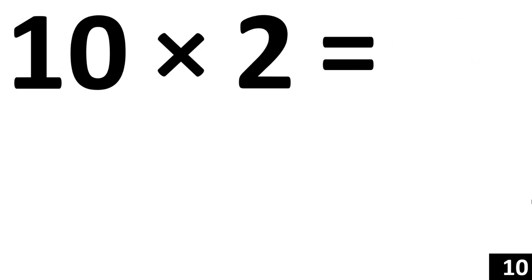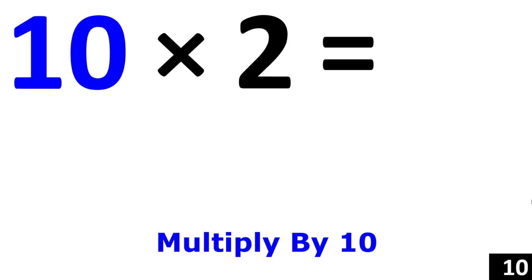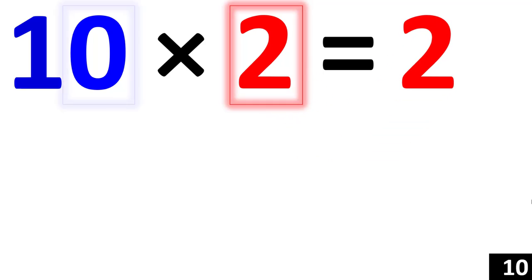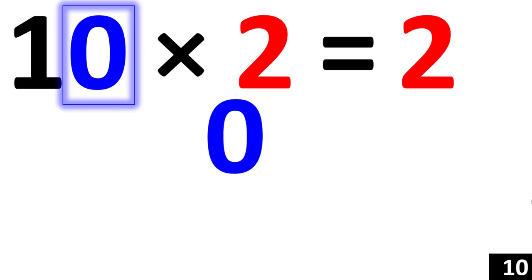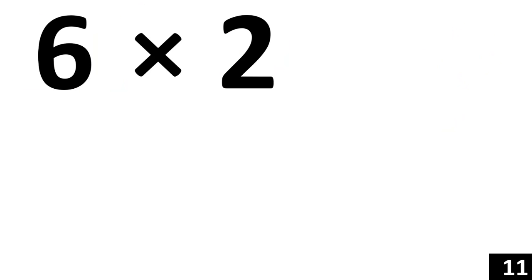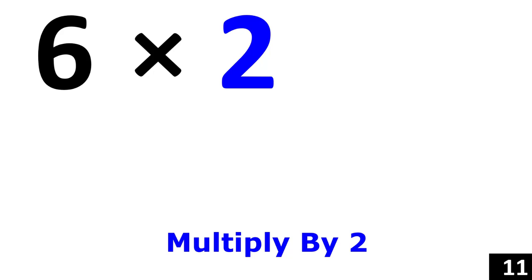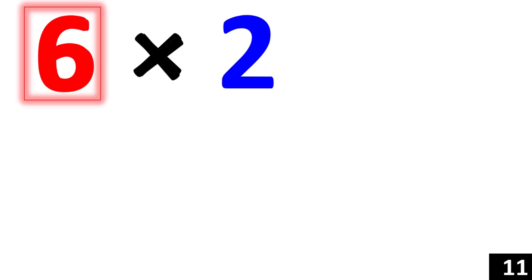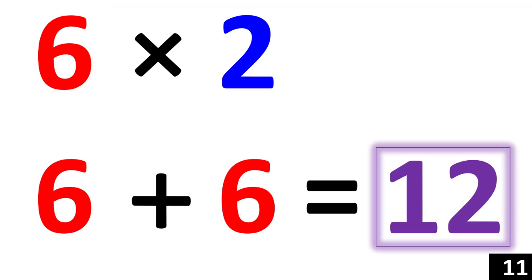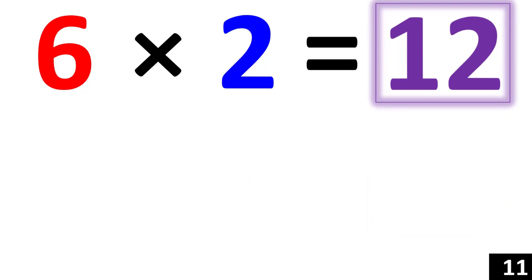For 10 times 2, we just use the rule of 10. Any number times 10 is that number with an added 0. So 10 times 2 is a 2 with an added 0. That's 20. Let's try 6 times 2. 6 times 2 is the same thing as 6 plus 6. 6 plus 6 is equal to 12. So 6 times 2 equals 12.